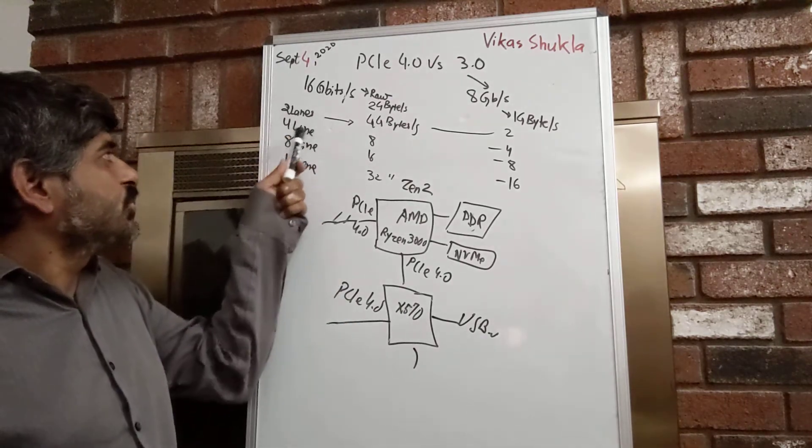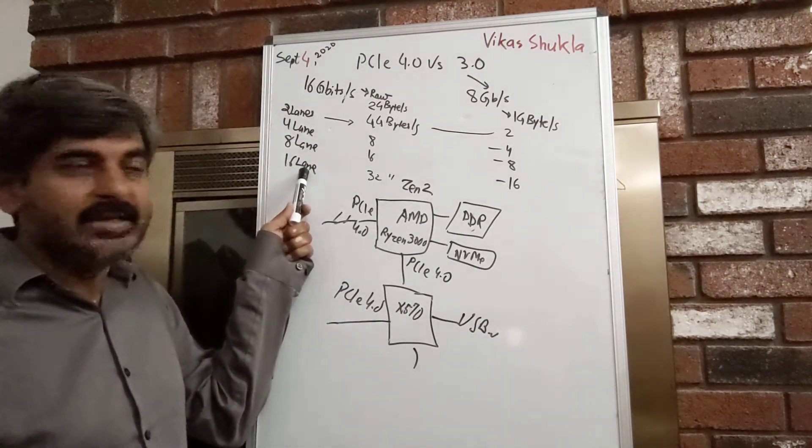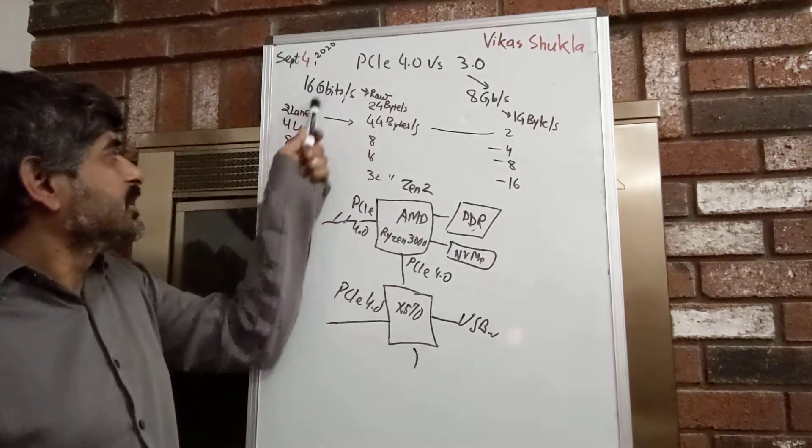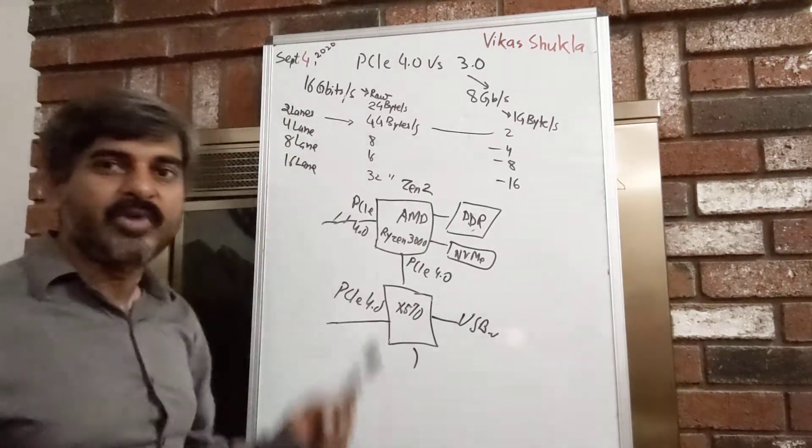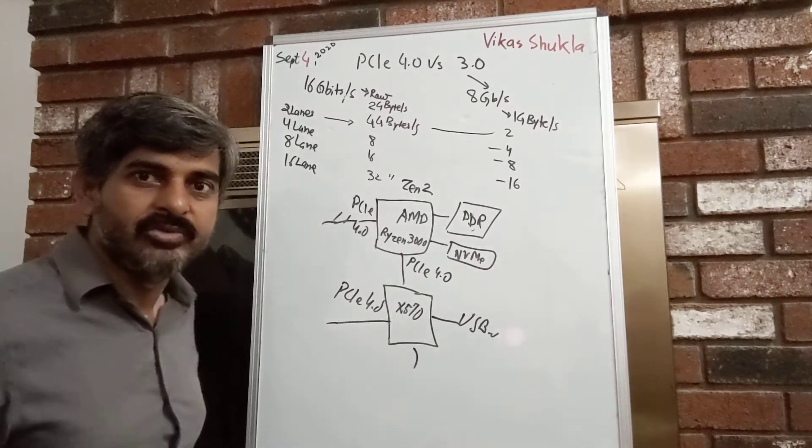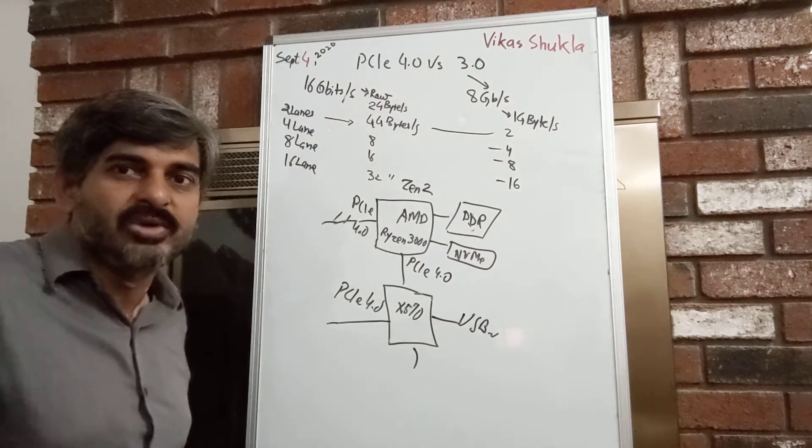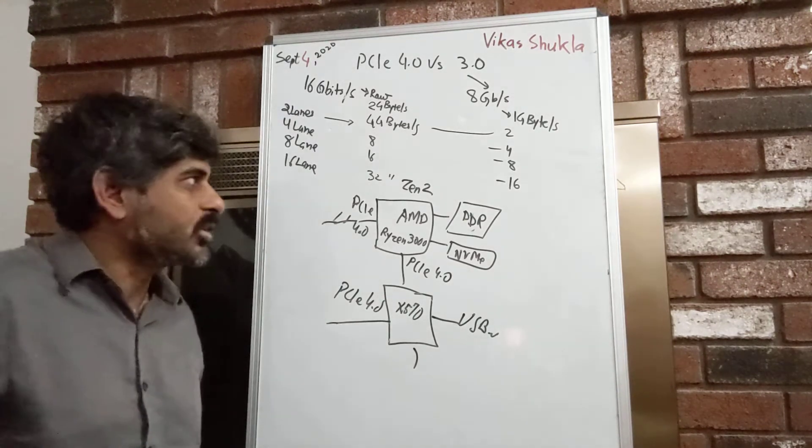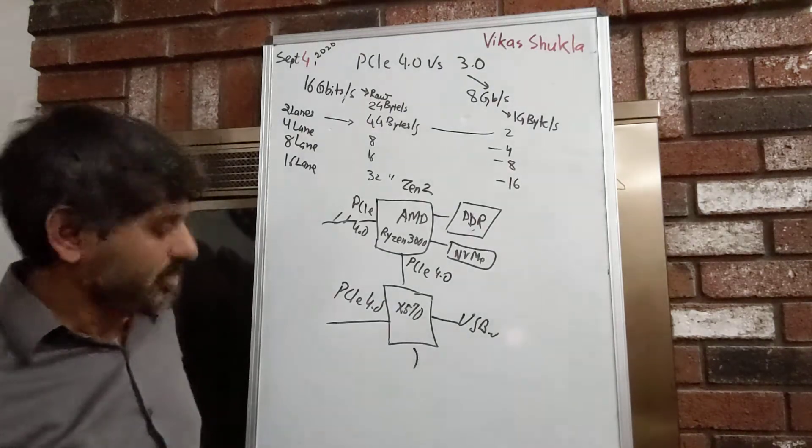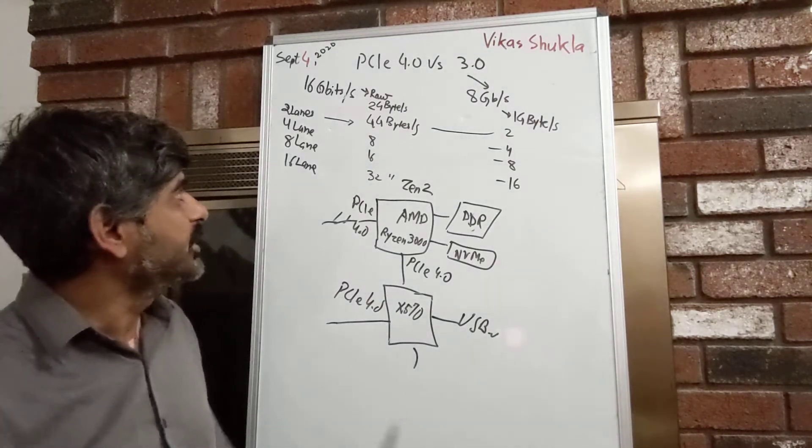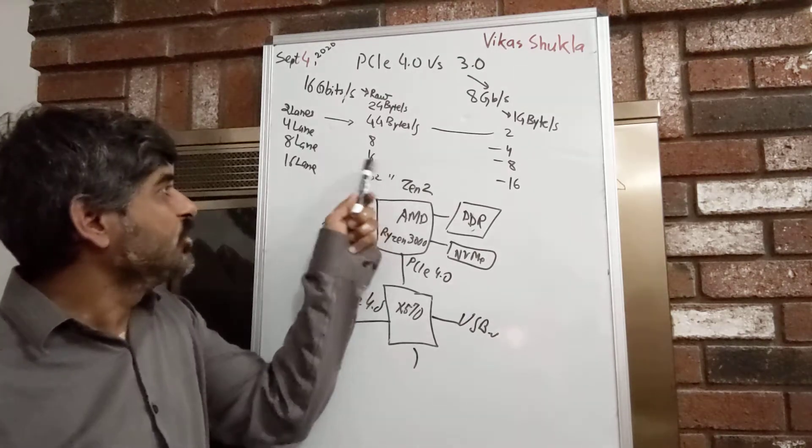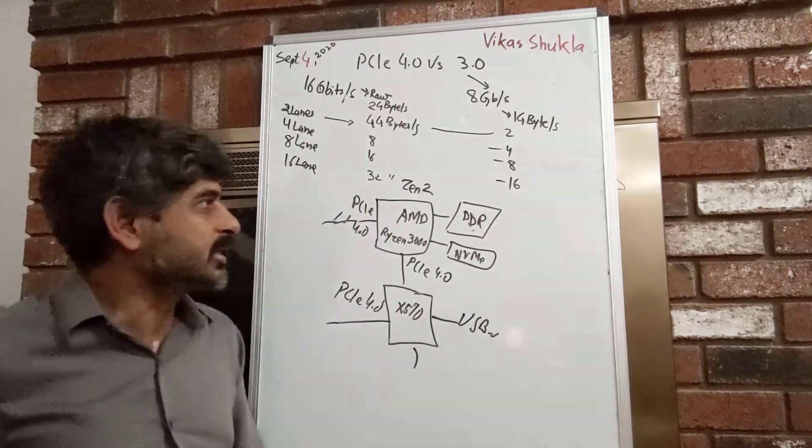You could use 2 lanes, 4 lanes, 8 lanes, and 16 lanes, and then that will cause a multiplication factor. Basically, instead of 1 electrical line, we use 2 electrical lines to double the transfer rate. And correspondingly, we can peak data transfer rate, raw data transfer rate will be 32 gigabytes per second, while it will be 16 gigabytes per second in case of PCI 3.0.